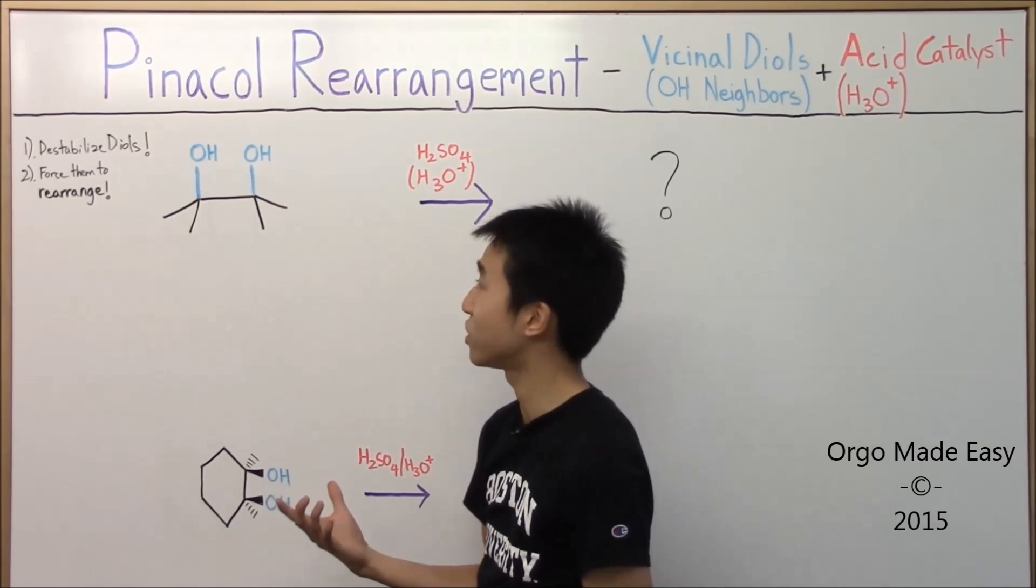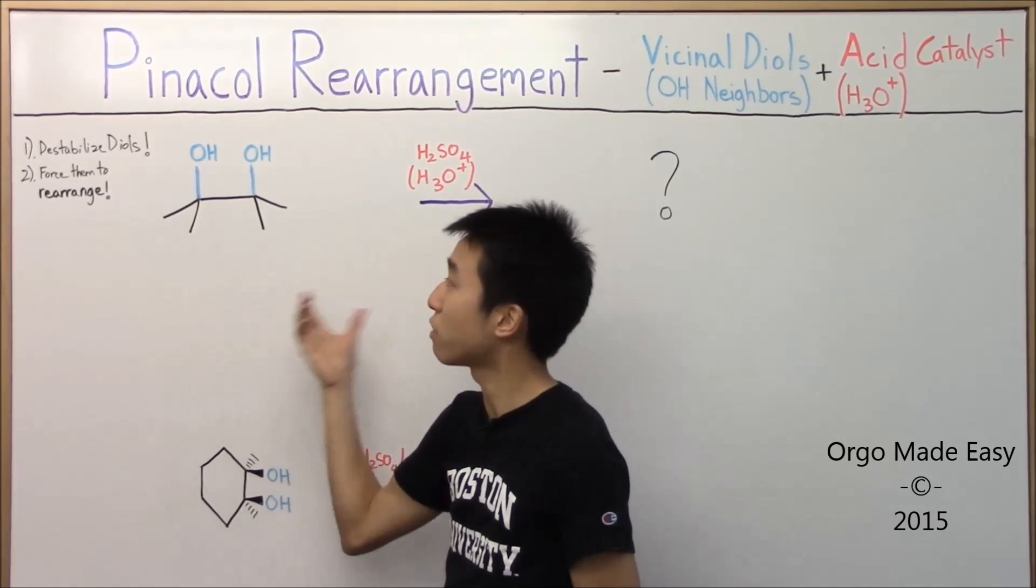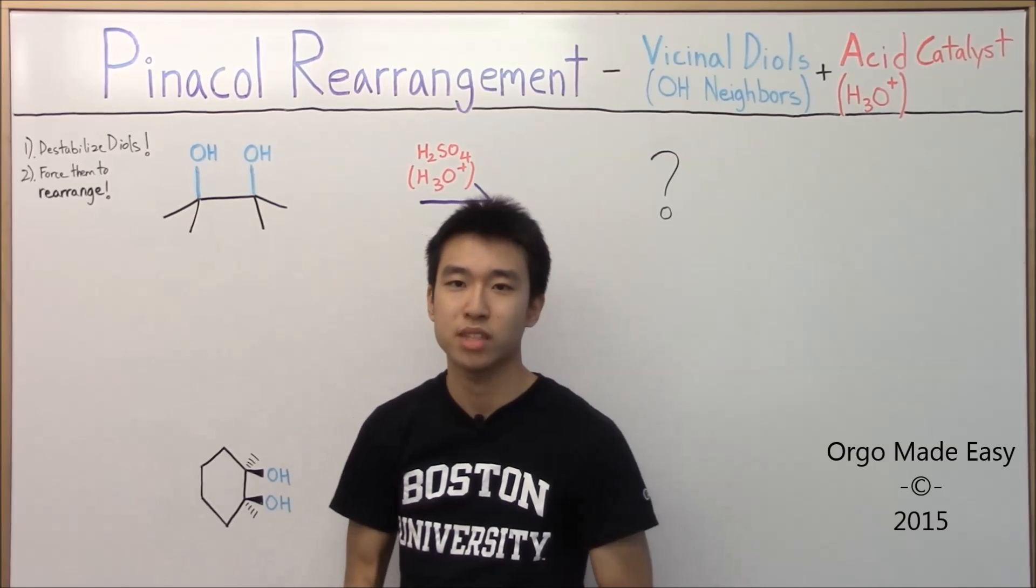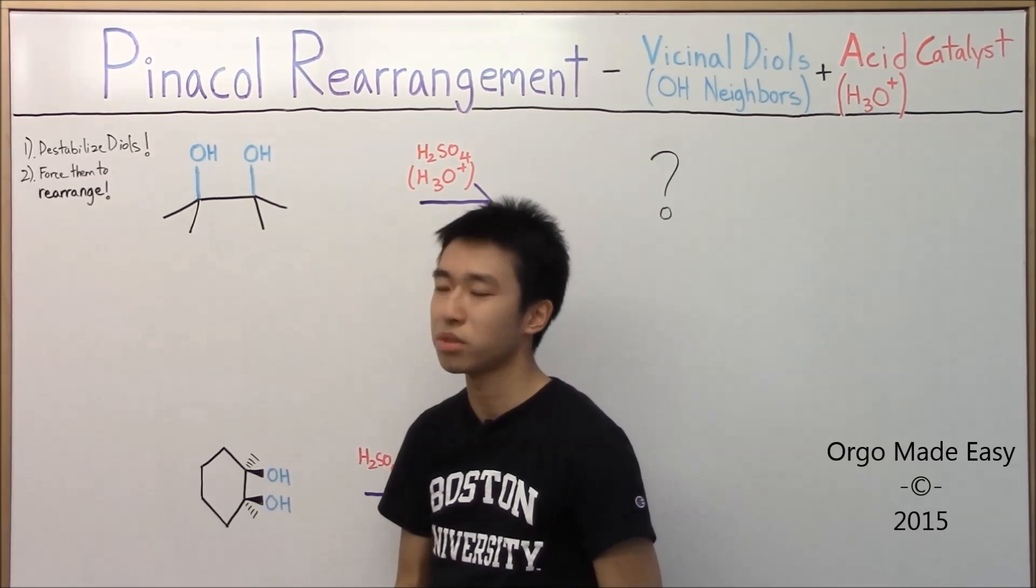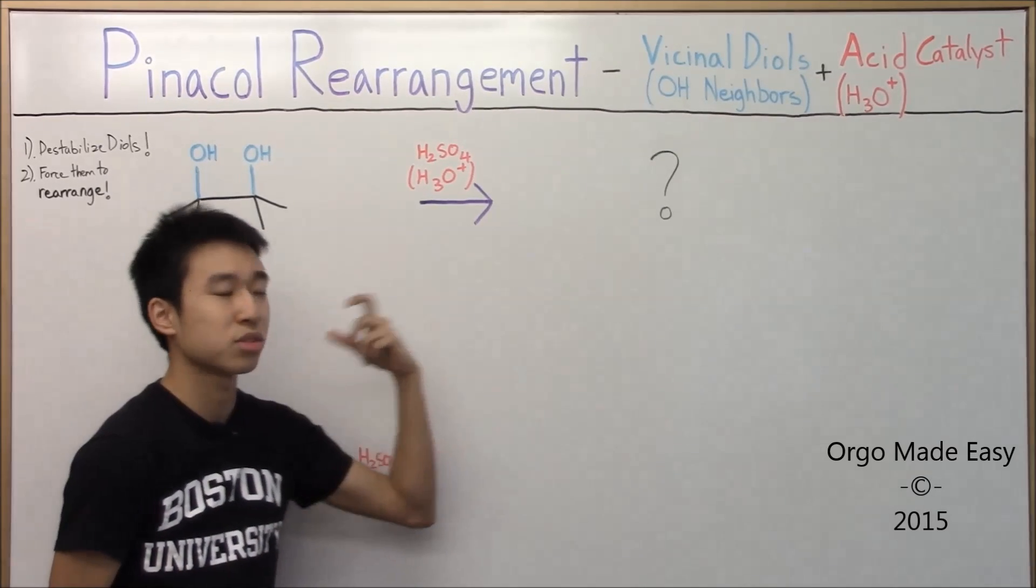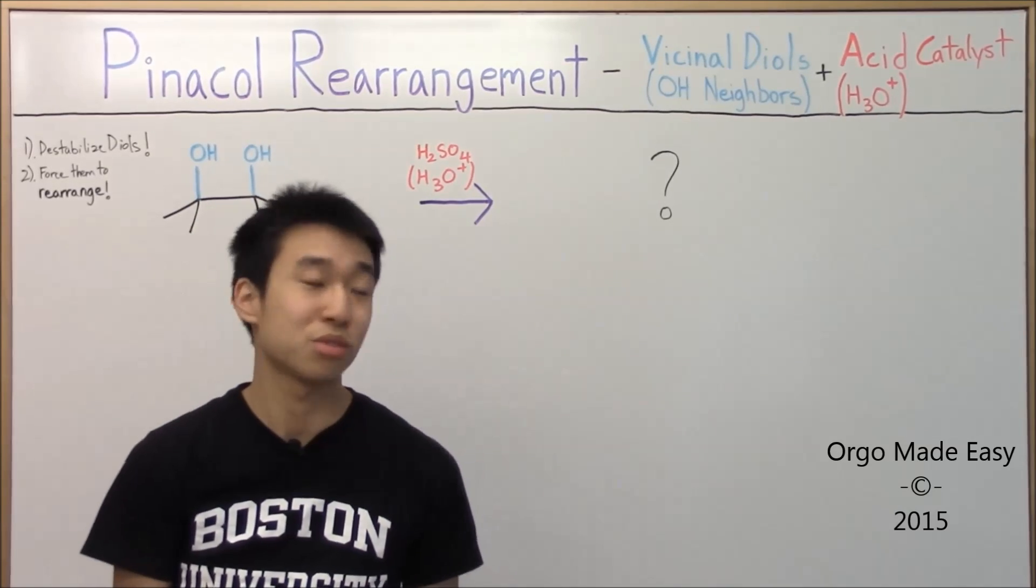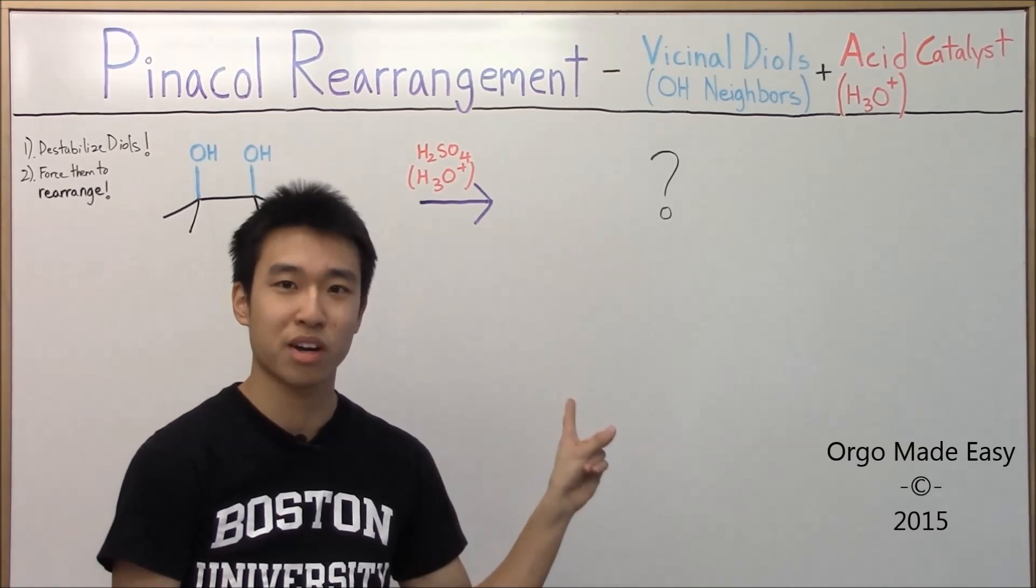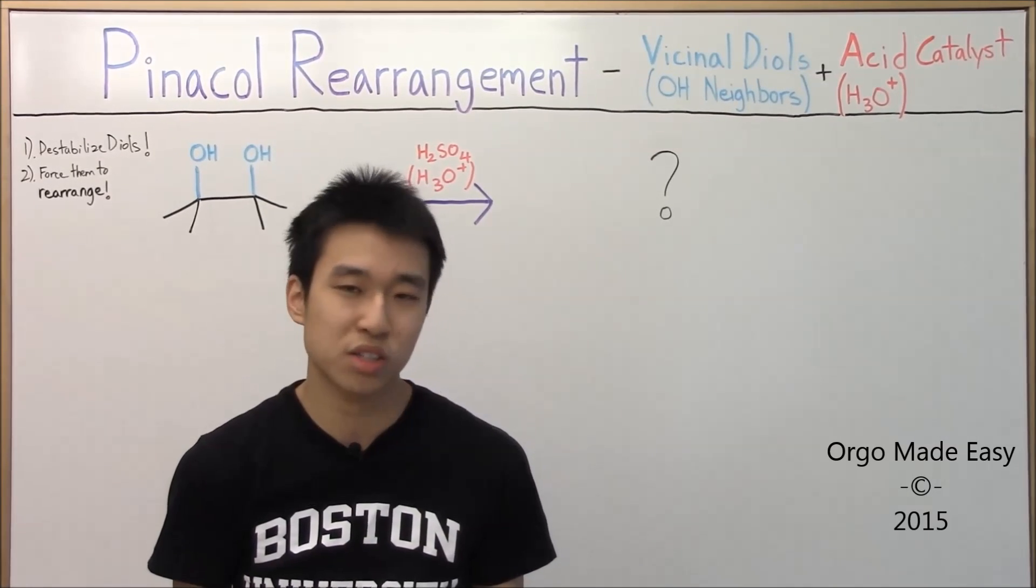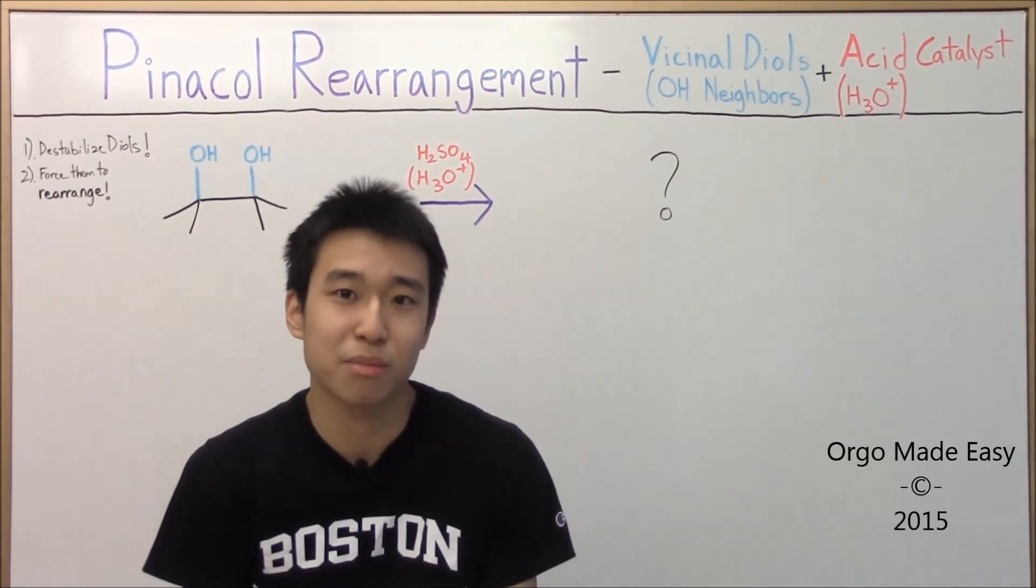Well, in this reaction, all you're really doing is just using the acid catalyst to destabilize the diols, and then that forces them to rearrange in order to be more stable. That's pretty much it. If you keep remembering that, that'll help you figure out the mechanism. Your job is to take a guess and come up with a product. Don't worry if you don't really know or don't really remember it, just treat it like a test question. You have to put something down, so just take a guess. Hit pause and come back in a couple of seconds.